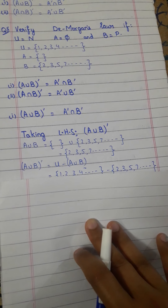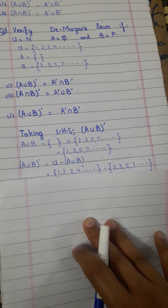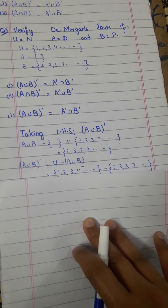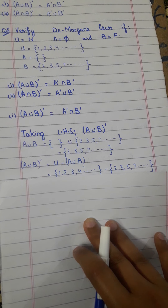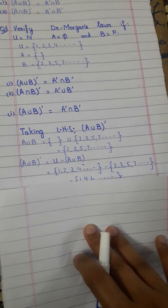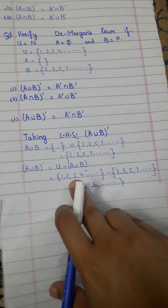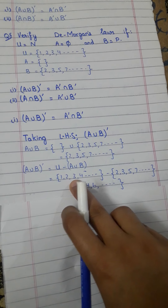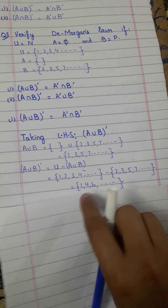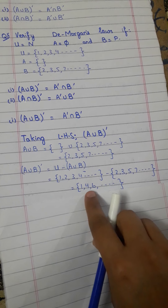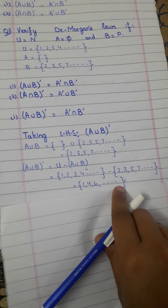Put the value of U — {1, 2, 3, 4, ...} — minus the answer of A∪B, which is {2, 3, 5, 7, ...}. The answer becomes those members which are present in U but not in that set: {1, 4, 6, ...} and so on.